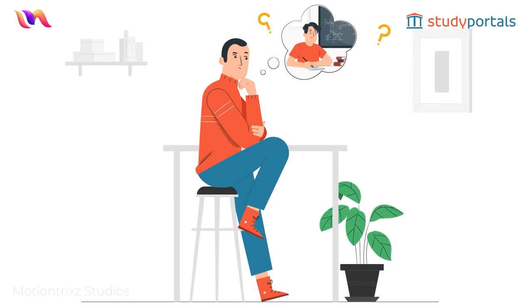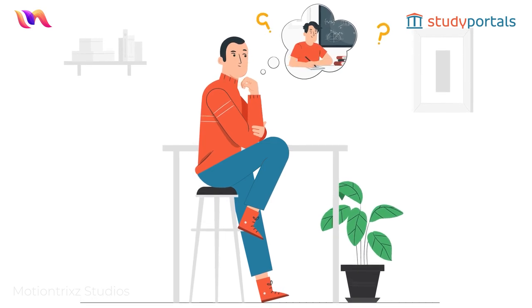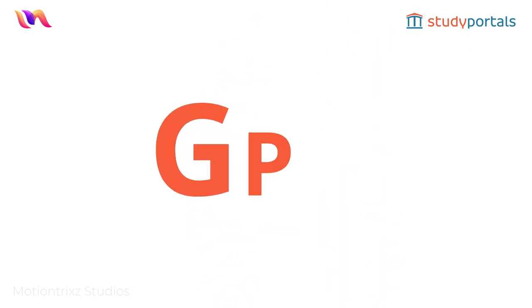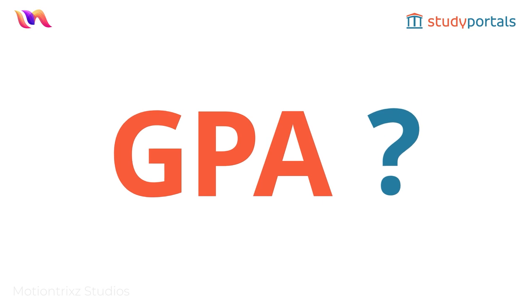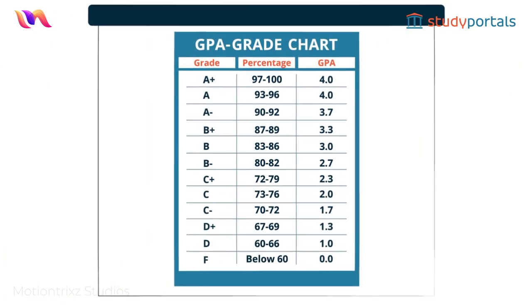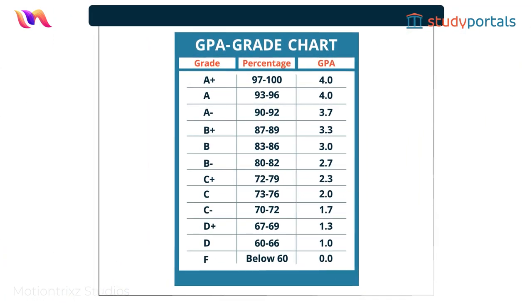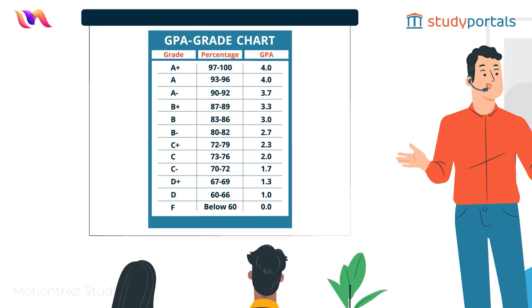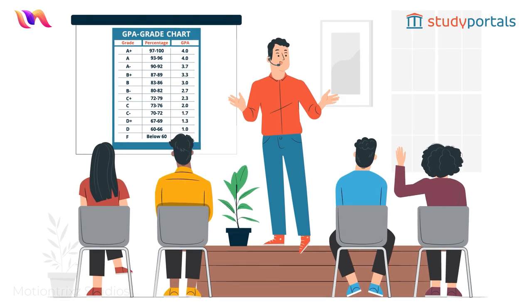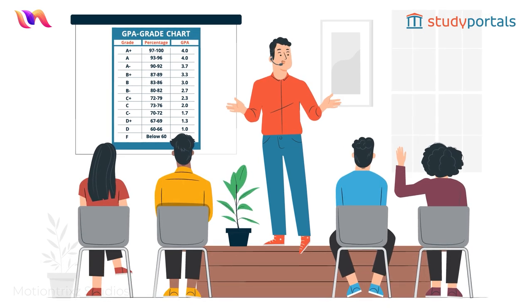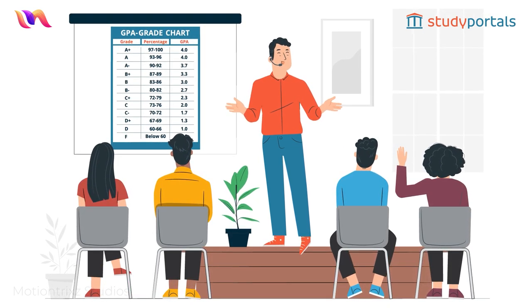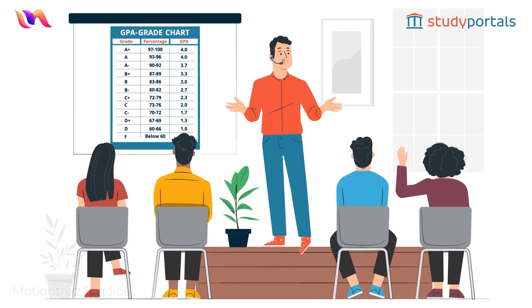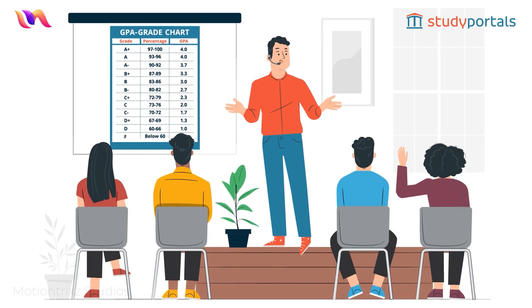Are you considering studying in the United States? If so, you've probably heard of GPA. But what is GPA exactly? GPA stands for Grade Point Average, which is a number that tells how well you're doing in your classes. Most US universities use GPA to determine if you're a good student or not.